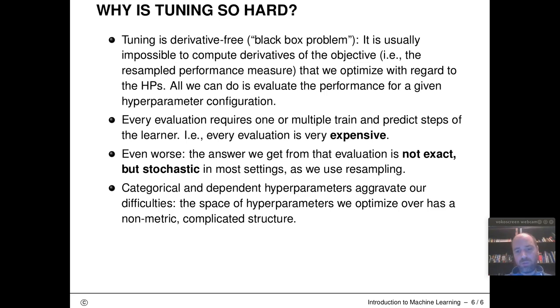And categorical and dependent hyperparameters aggravate our difficulties here. The space of hyperparameters we optimize over has often a very complicated non-metric structure. So many of the optimization techniques that are very efficient, that we have understood very well nowadays, often can only deal with a cross product of usually continuous real valued parameters and not these mixed categorical hierarchical dependent spaces.